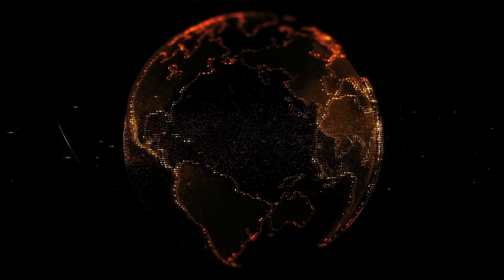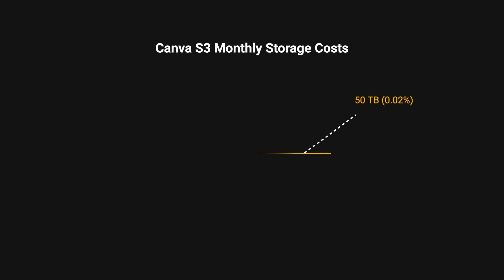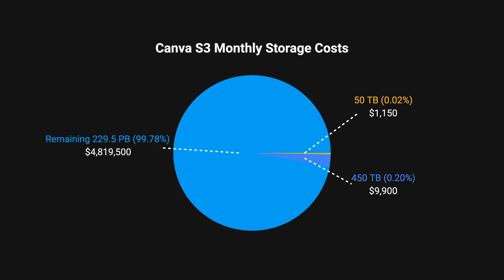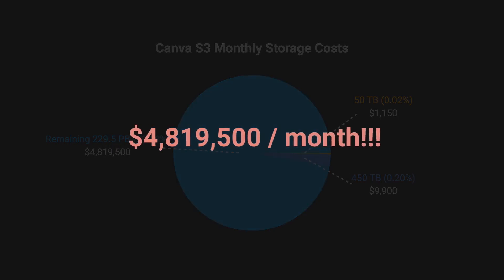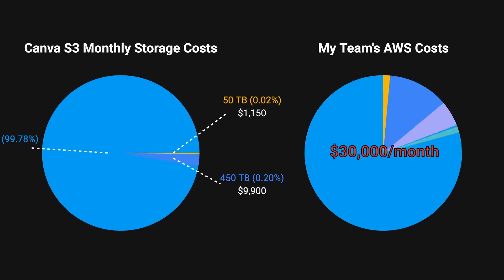To illustrate the scale at which Canva operates, let's consider their potential monthly storage costs using standard Amazon S3 pricing. The first 50 terabytes would cost around $1.2k, the next 450 terabytes would cost around $10k, and the remaining storage costs would be around $5 million. And I thought that my team's $30k monthly AWS bill was expensive.